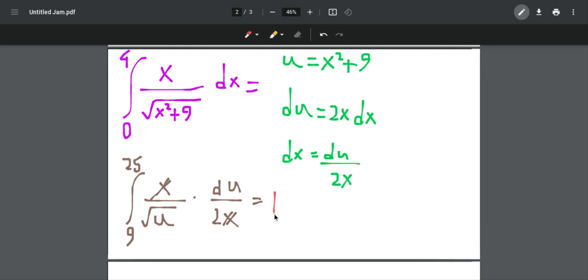We can write it as: we can take the 1 half outside of the integral because it's a constant. So we have 1 half times the integral from 9 to 25, and then I can write 1 over square root of u as u to the negative 1 over 2, and then du.